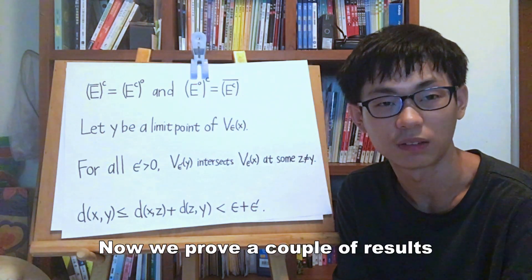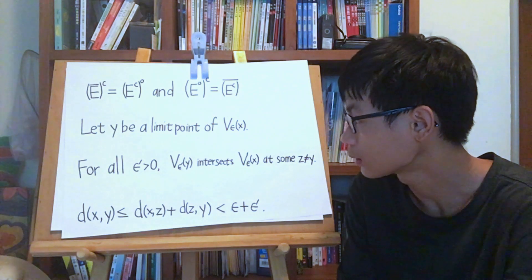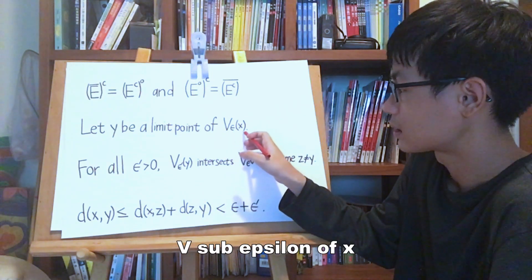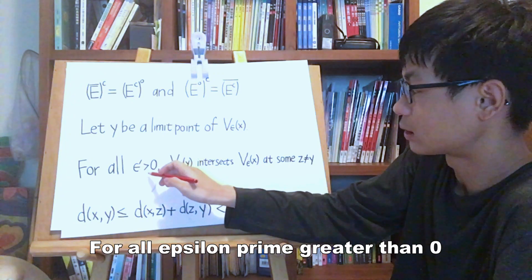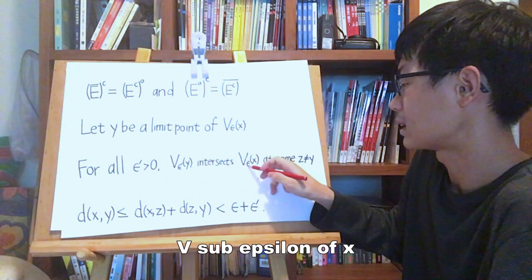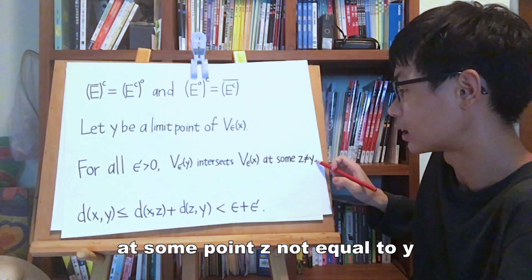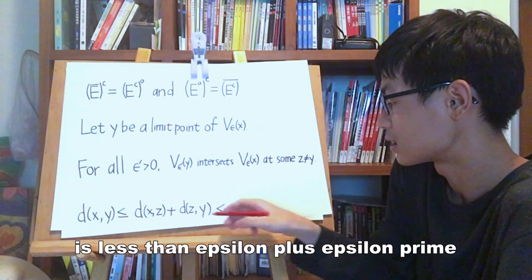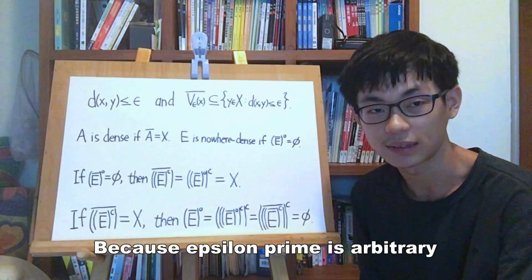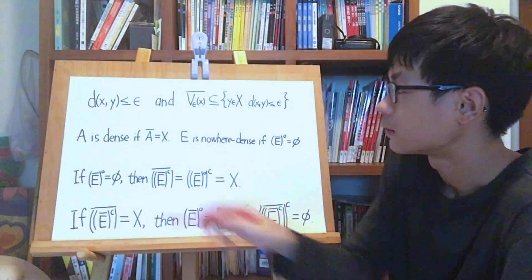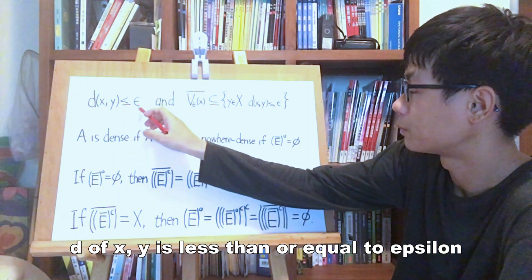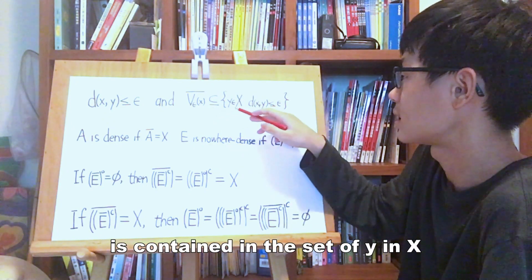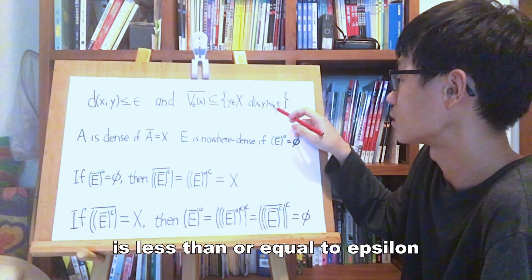Now we prove a couple of results that we will need. Let x be a point in X, and let y be a limit point of V_epsilon(x). For all epsilon prime greater than 0, V_epsilon_prime(y) intersects V_epsilon(x) at some point z. Then d(x, z) is less than or equal to d(x, z) plus d(z, y), which is less than epsilon plus epsilon prime. Because epsilon prime is arbitrary, d(x, y) is less than or equal to epsilon. Thus the closure of V_epsilon(x) is contained in the set of y in X such that d(x, y) is less than or equal to epsilon.